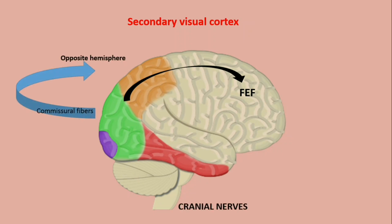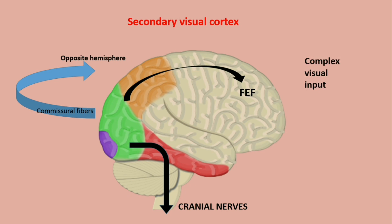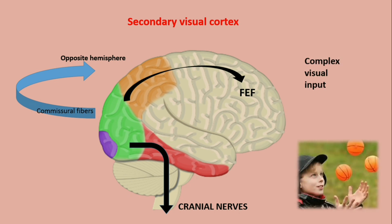Through descending pathways, the secondary visual cortex integrates complex visual input from both hemispheres and is also involved in sensorimotor eye coordination.